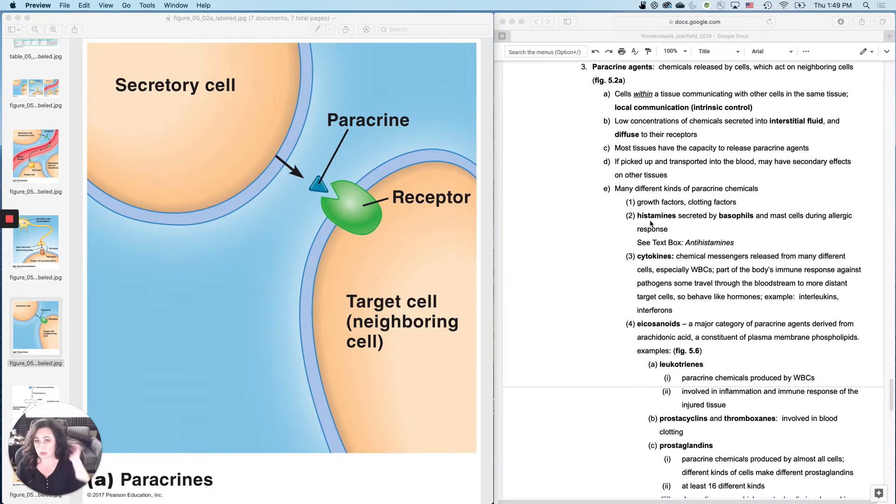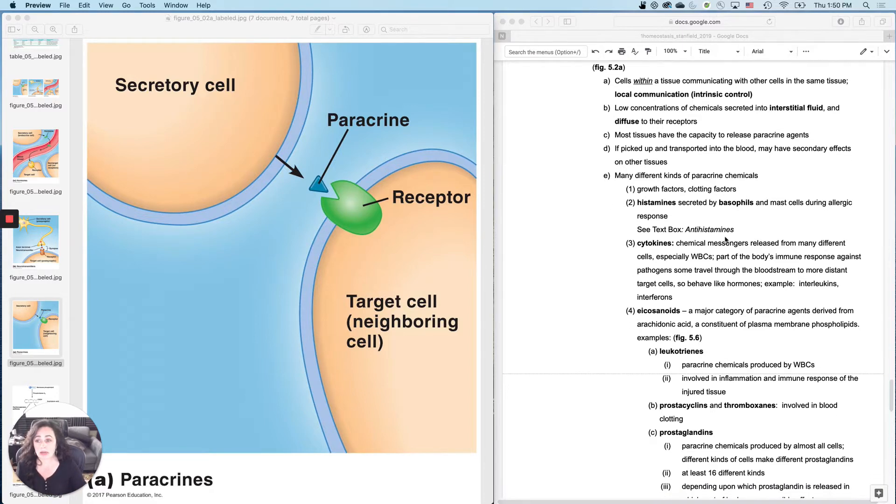As I mentioned before, paracrine agents are released to talk to their neighbors. A good way to approach thinking about paracrine agents is that inflammation, response to infection, and swelling generally start out local. This is intrinsic communication. What kinds of things should be local and not body wide? Hormones can have body wide effects, but these I want to be local.